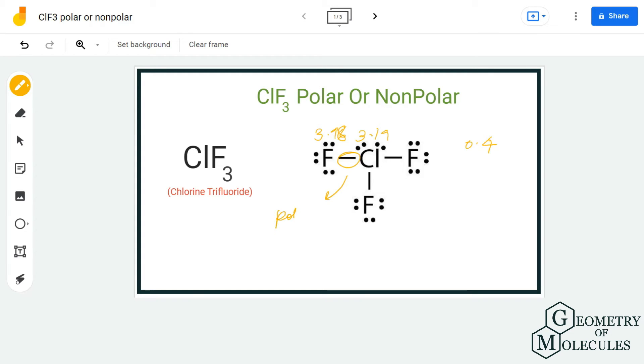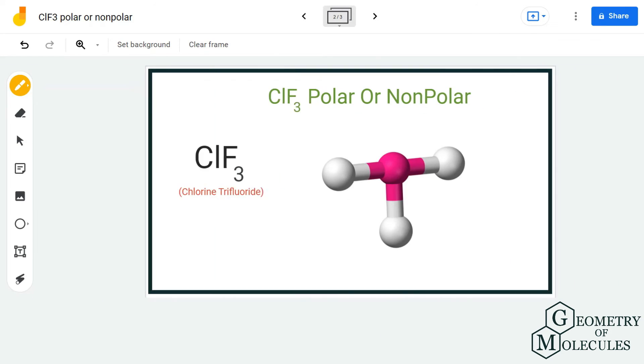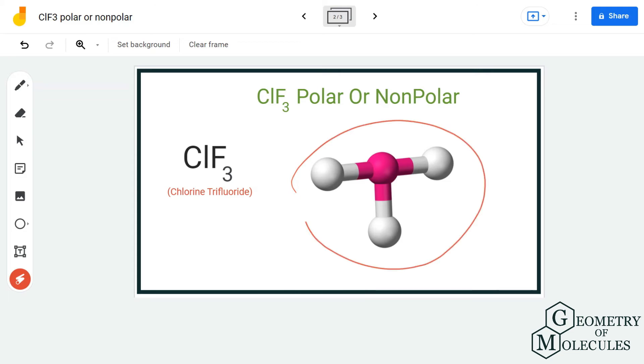This is for the bonds formed between fluorine and chlorine. But besides that, if you look at its molecular geometry, the molecule is T-shaped. And because of the presence of these two lone pairs of electrons...